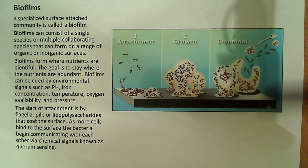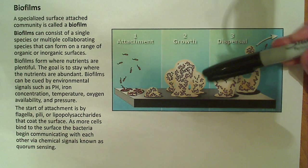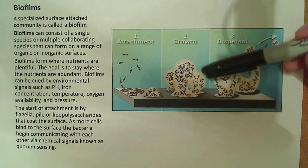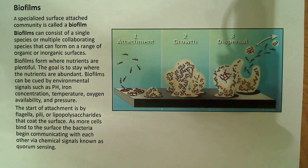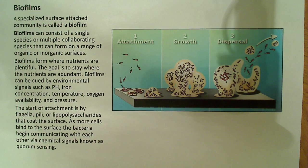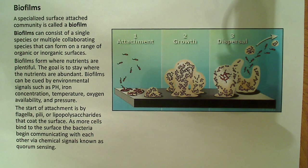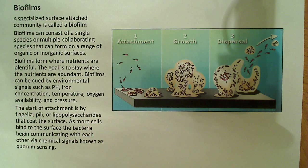What they end up forming is this specialized three-dimensional structure. It's not just flat on the surface — it's a three-dimensional thriving community. And it provides protection from temperature and pH changes, creating a very easily maintained environment for the bacteria to survive in.